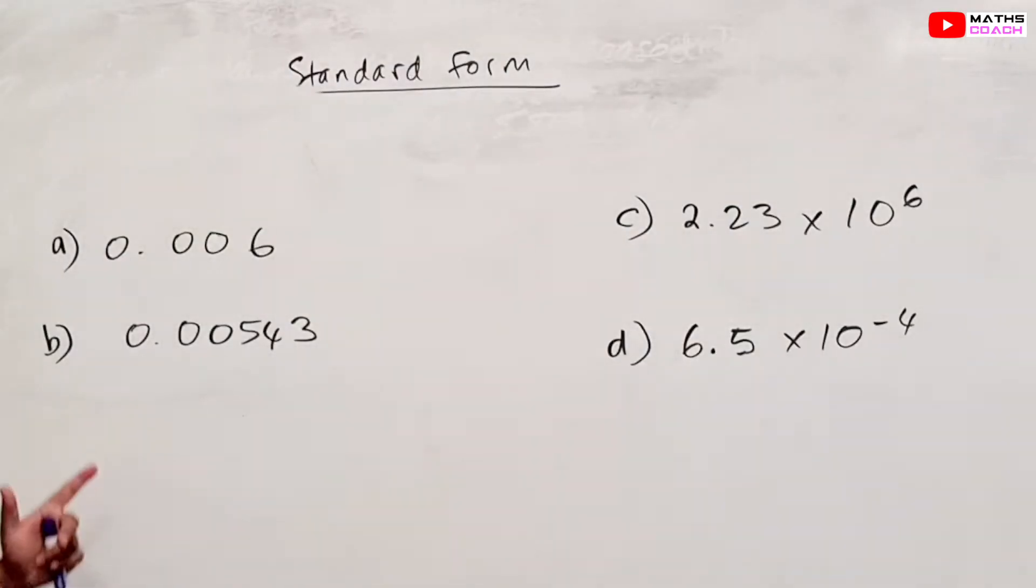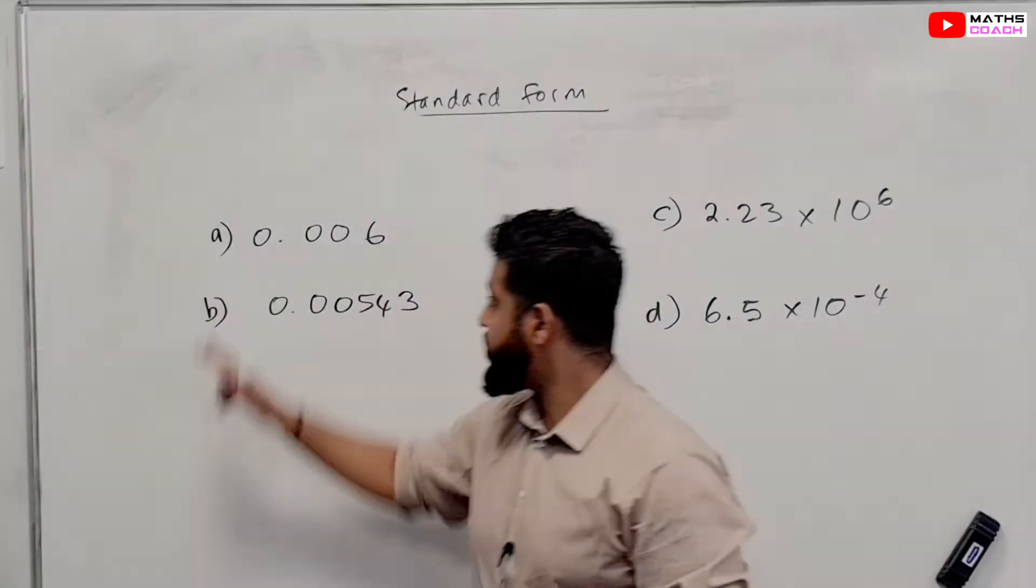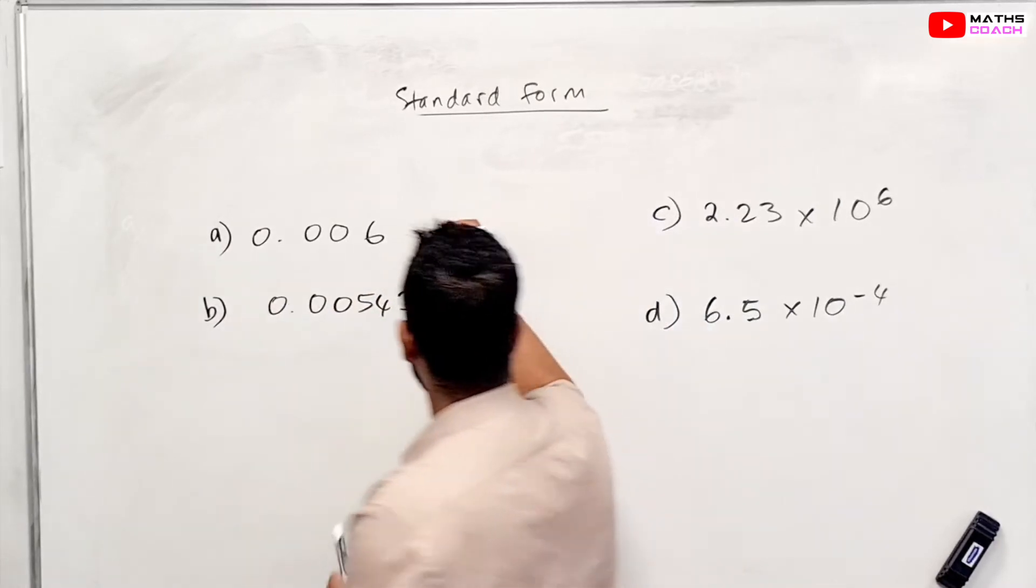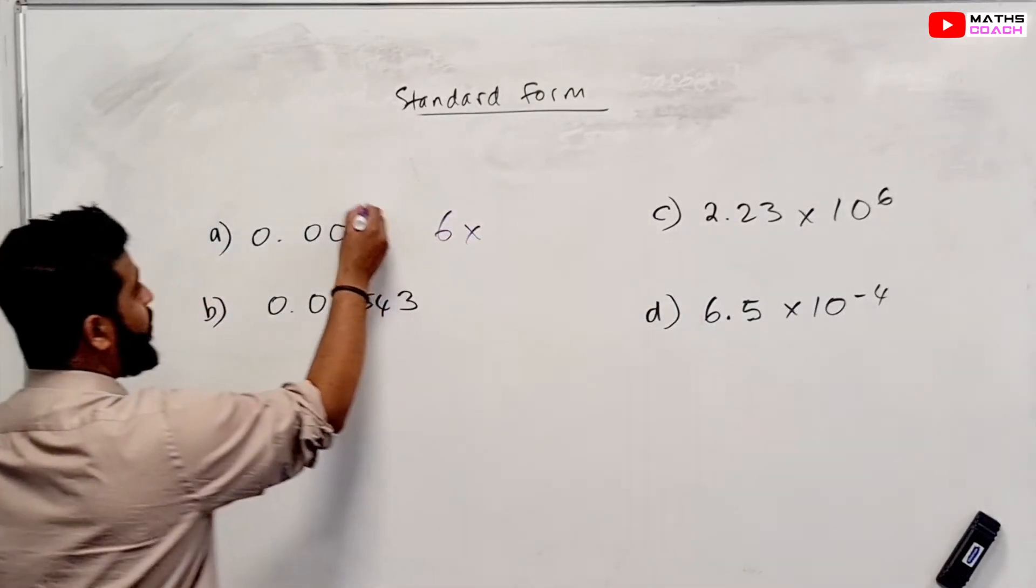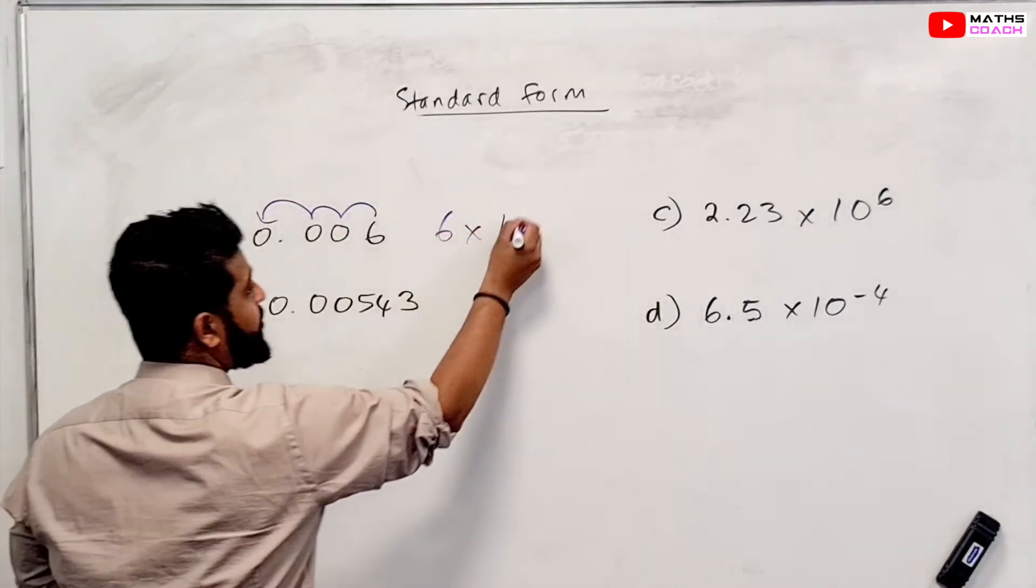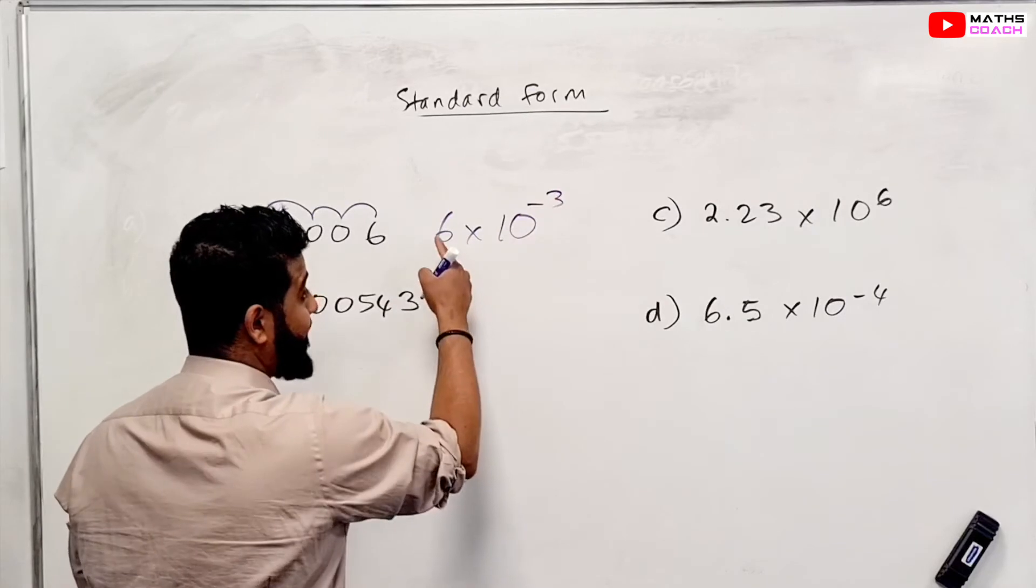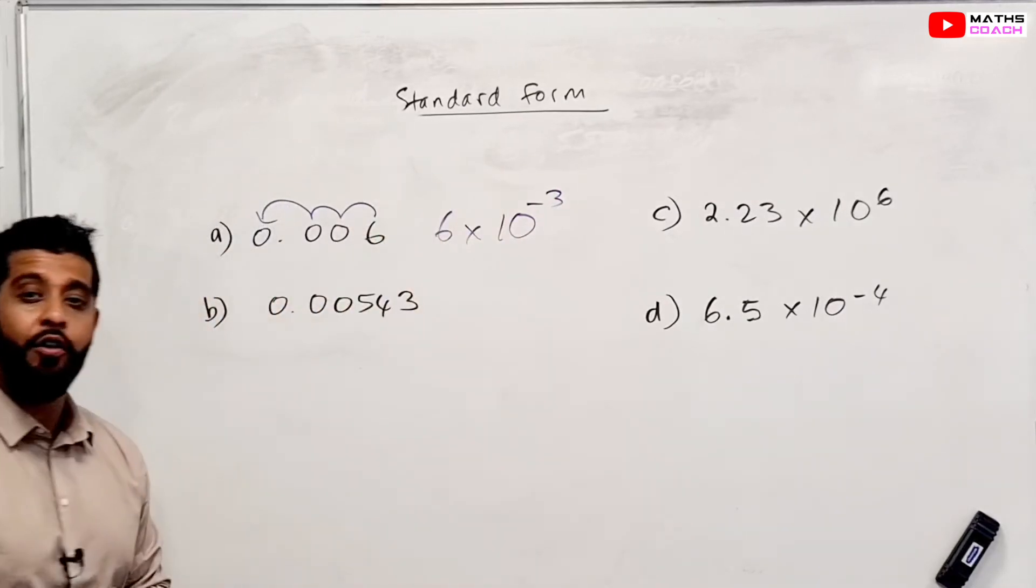Why don't you have a go at these ones, pause the video, try it, and then I'll go through it with you. Right, so let's go through this one. We are going to write this in standard form. So we are going to have 6 times 1, 2, 3. So we move it three spaces, and it's a decimal value, so it's minus 3. So you should get 6 times 10 to the power of minus 3.